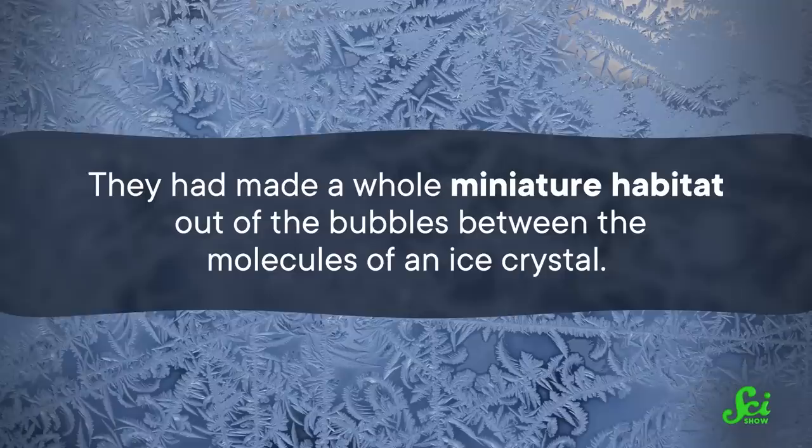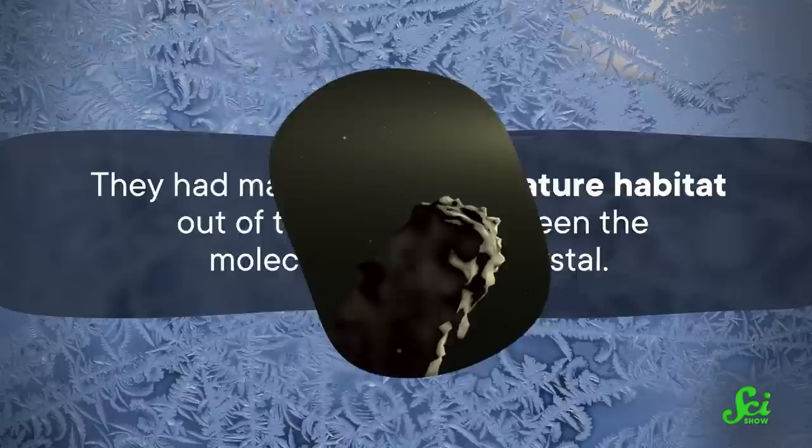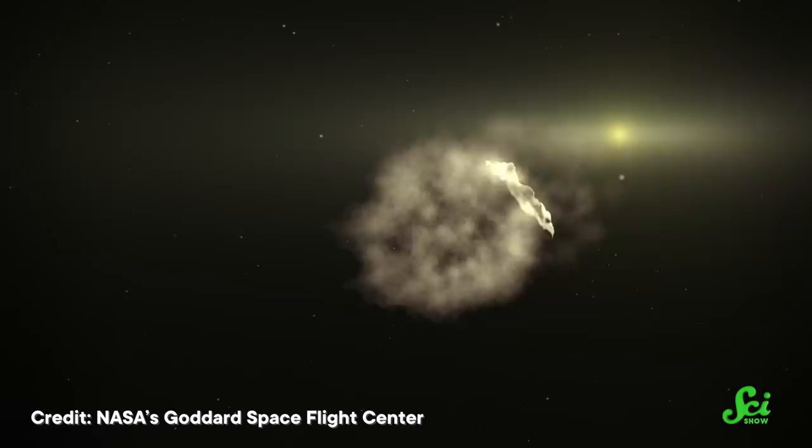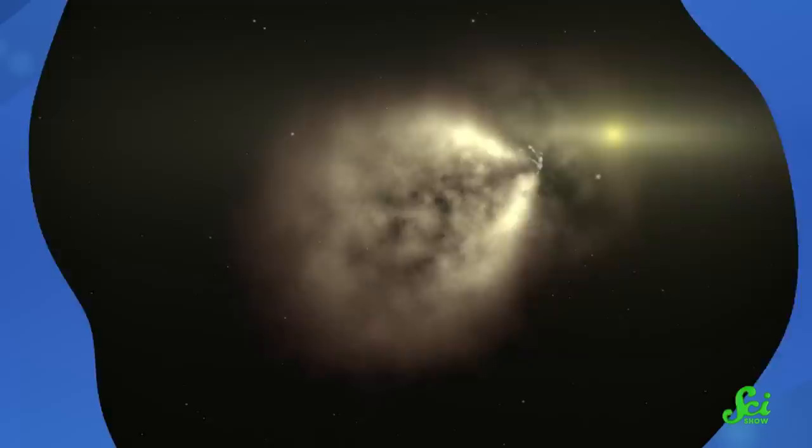They had made a whole miniature habitat out of the bubbles between the molecules of an ice crystal. Beyond Earth, methane hydrates and other icy blends may exist on all kinds of rocky bodies, including comets, moons, and planets. And if this ice can host life on Earth, maybe it could host life on other worlds too.